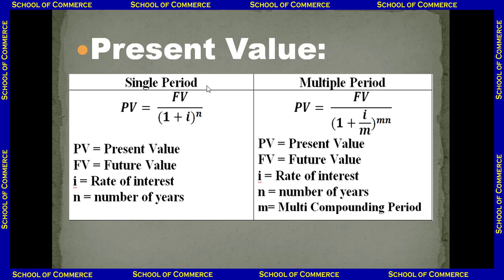This is called a single period. If you invest money today and receive money after some period — meaning the transaction happens two times, once you give and once you receive — that is called a single period. If the transaction occurs more than two times, that is called a multiple period.